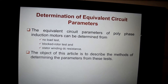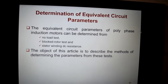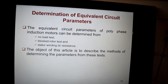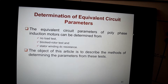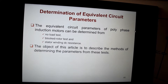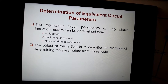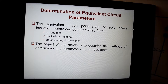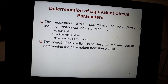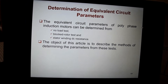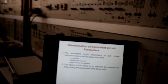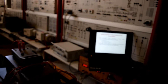When we finish those three tests, we can determine the equivalent circuit parameters — that means R1, R2, X1, and X2. So if we know those parameters and the excitation components, we can determine the performance of the induction machine. Now let us see how to do the first test, which is the no-load test.